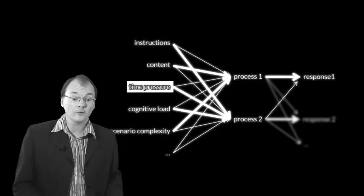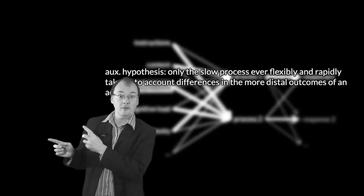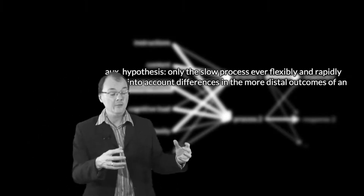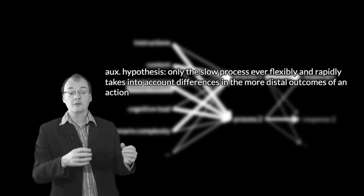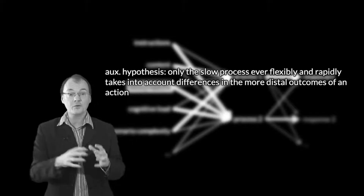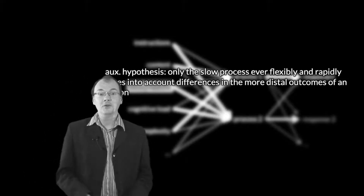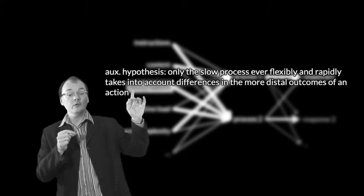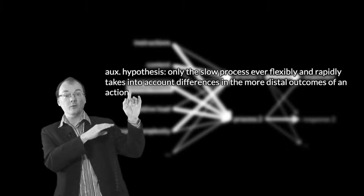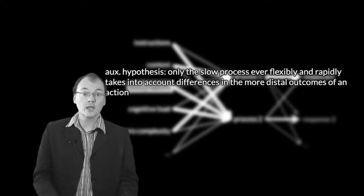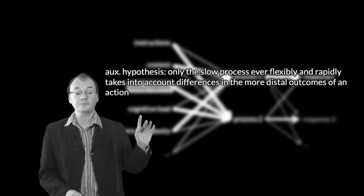From that alone it's very difficult to generate a prediction, so we need an auxiliary hypothesis. Green brings a whole bag of auxiliary hypotheses, but we don't need that complexity. What we did was identify which hypothesis is the weakest that will still generate the predictions — one that allows us to relate the theory to the available evidence and also to new evidence. So here's the hypothesis we've settled on.